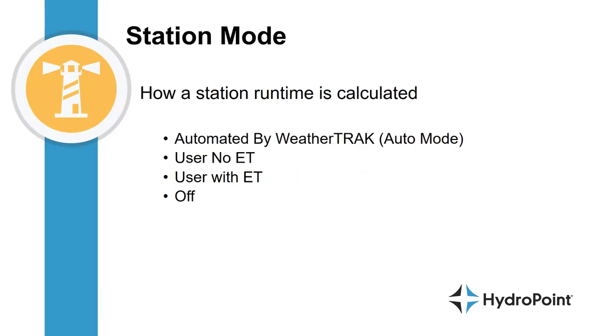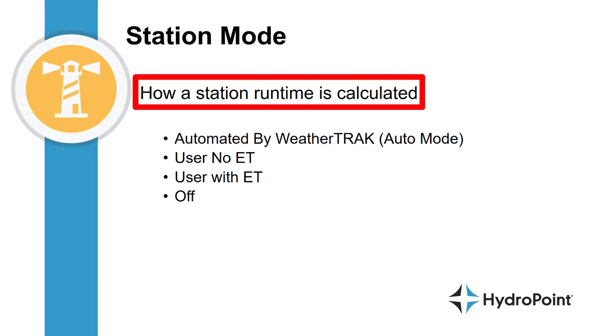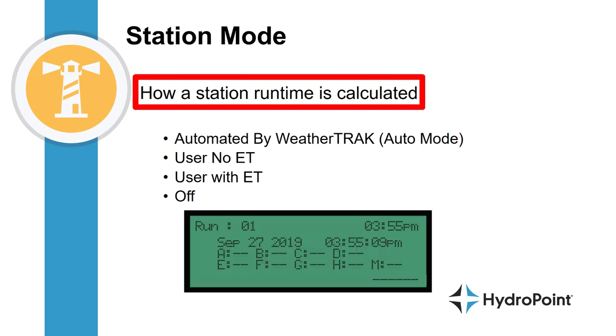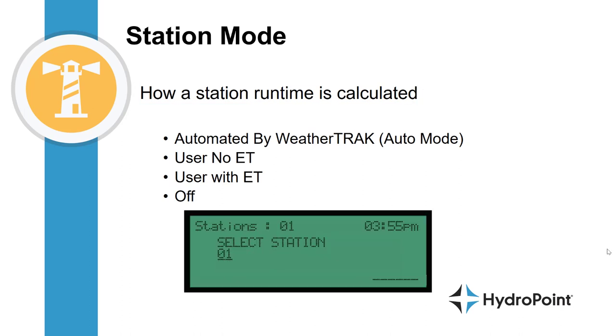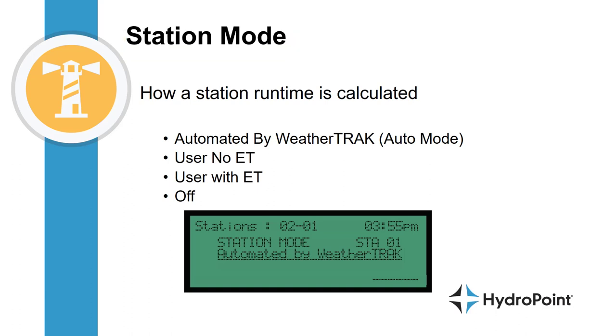When it comes to overseeding, the most important thing to understand about a WeatherTrack is how a station runtime is calculated. This is determined by the WeatherTrack program setting called station mode.